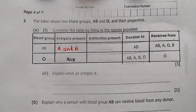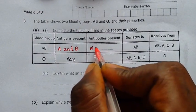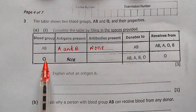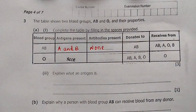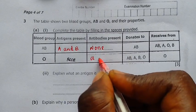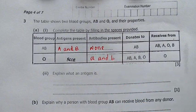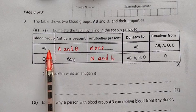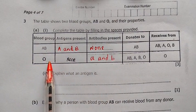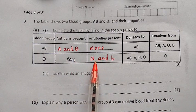Now let us look at the antibodies. A person with blood group AB doesn't have any antibodies present in their blood plasma — they have none. Then a person with blood group O, they have antibody A and antibody B. So a person with blood group AB has antigen A and B but no antibodies. A person with blood group O has no antigens but has antibody A and B.